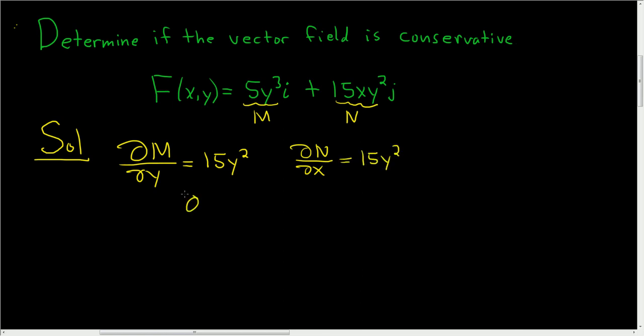So in this case, we have that del M, del Y, is equal to del N, del X. And both of these guys are continuous, so therefore, the answer is yes. We do have a conservative vector field.